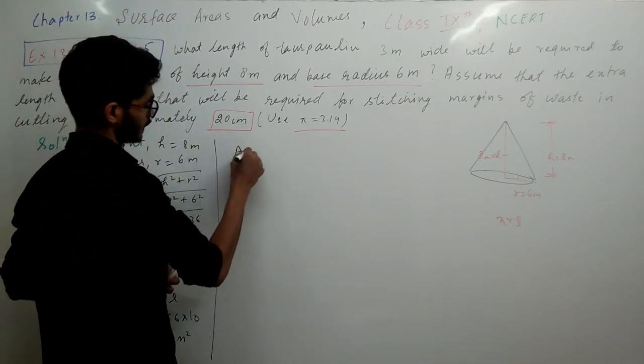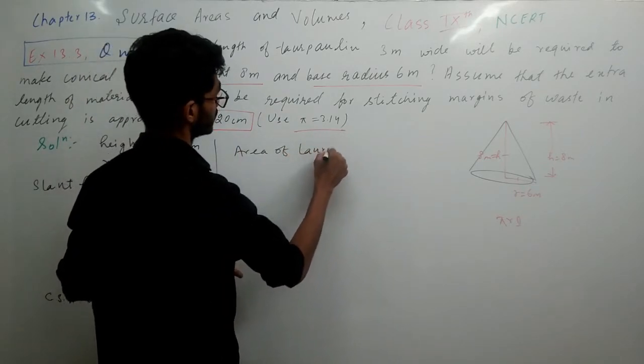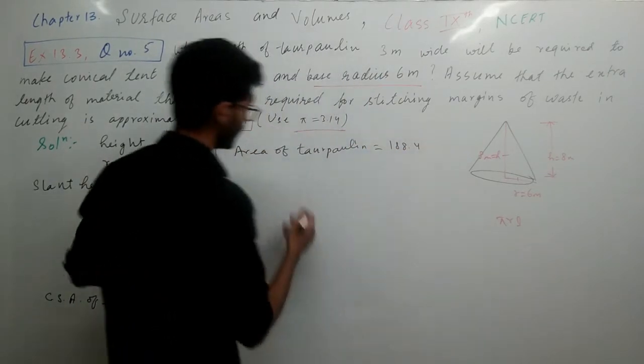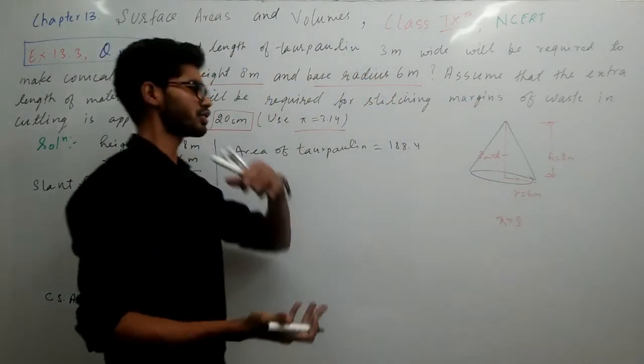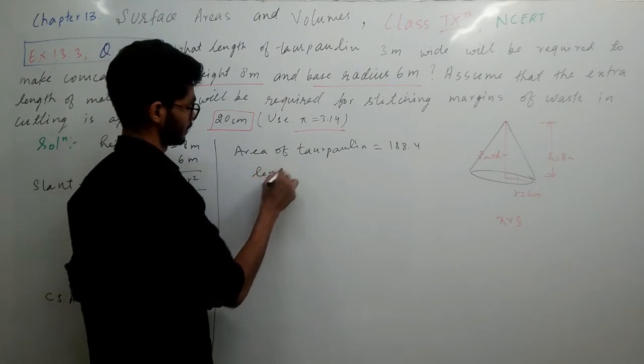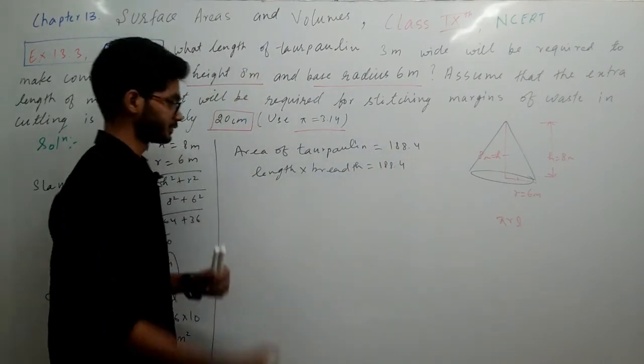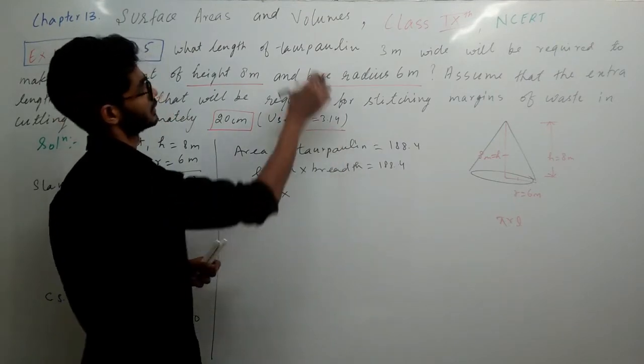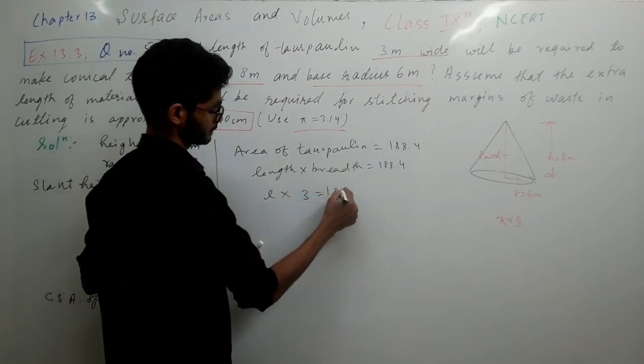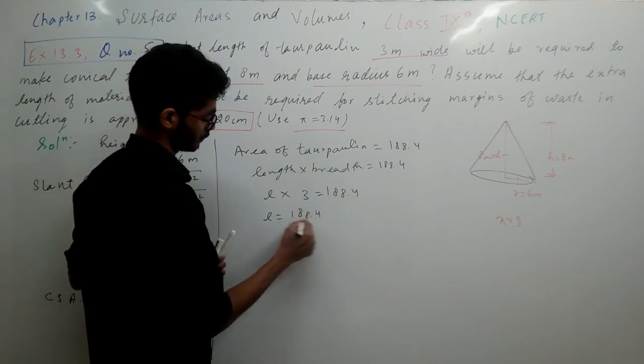Now for the tarpaulin, area equals length into breadth. Length we don't know, that's what we need to find. Breadth they've given us - it's 3 meter wide, which is 3. When you multiply here, it becomes divide there.